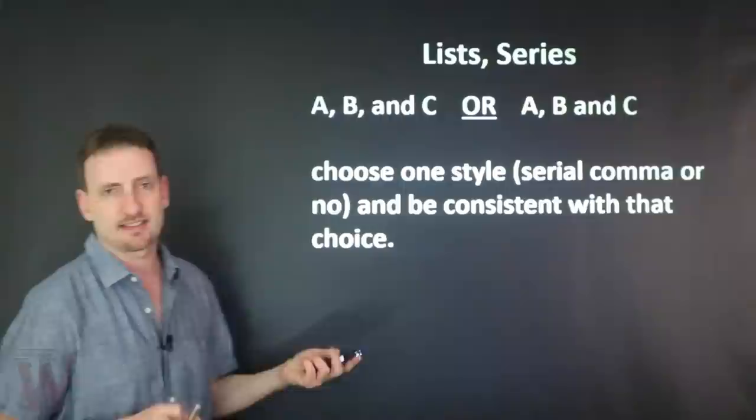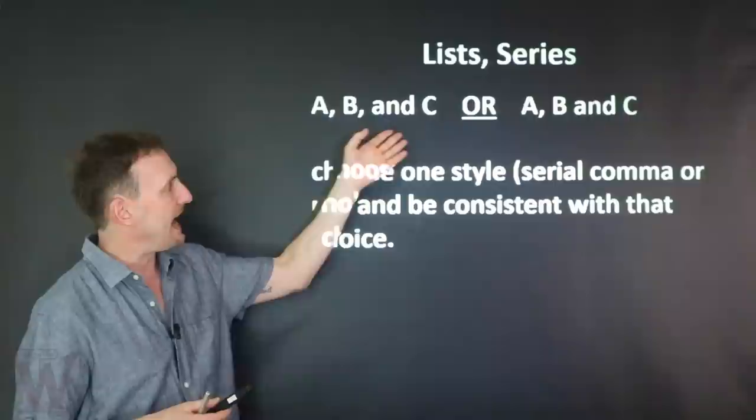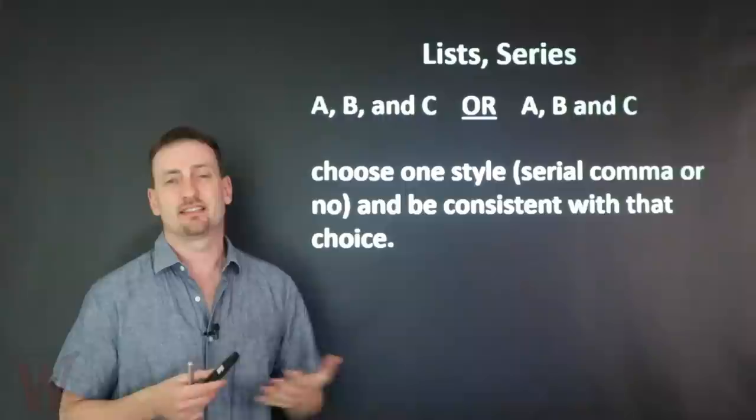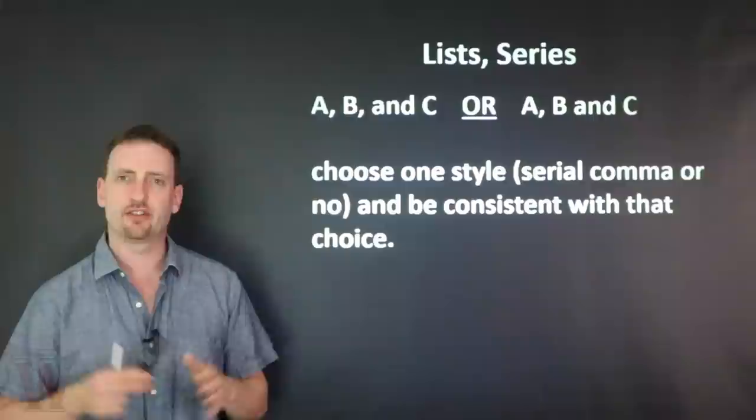So let's get into it now. We're going to start with lists and series. Very basic introduction: you have item A, item B, and item C. You can write it with the comma or without the comma. This final comma before the last item is called a serial comma. You don't necessarily need to know that term.